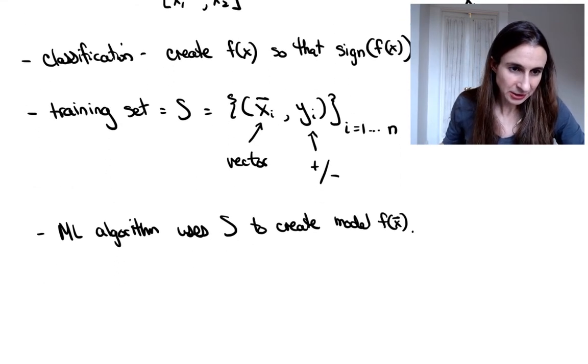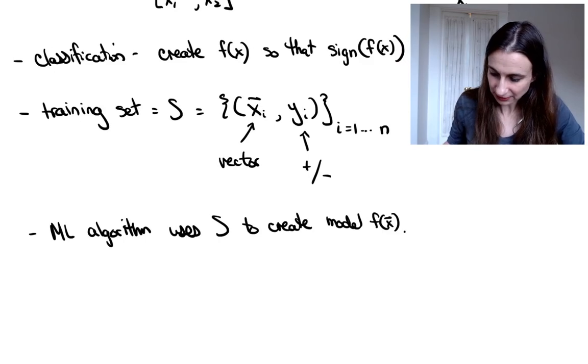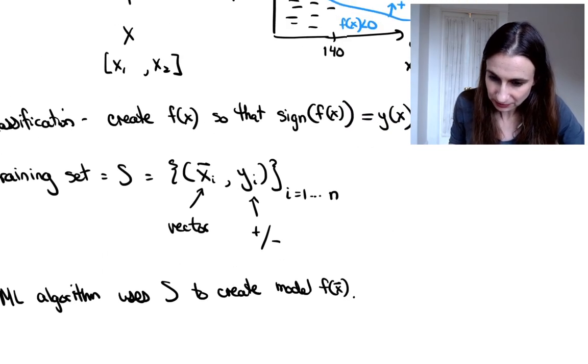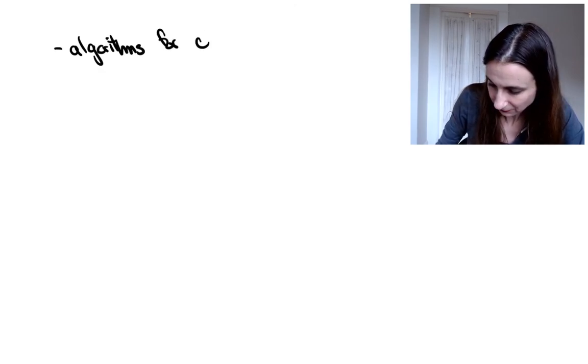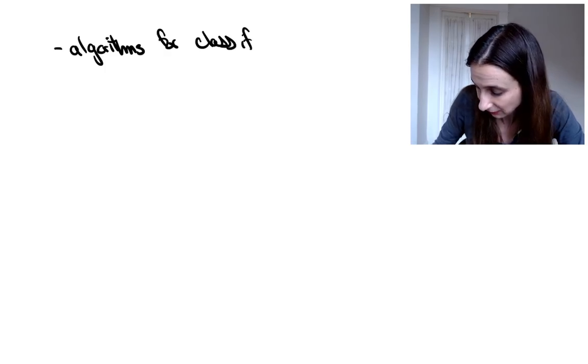So I think what I'm going to do just to finish up this part of the lecture is to just give you a list of algorithms for classification. So the task I just showed you, where you're trying to separate the positives from the negatives and the high dimensional space. So you create these decision boundaries. I'm just going to list a whole bunch of algorithms for doing that.